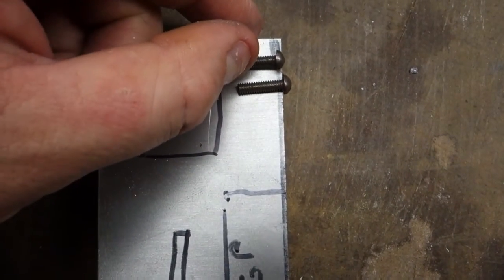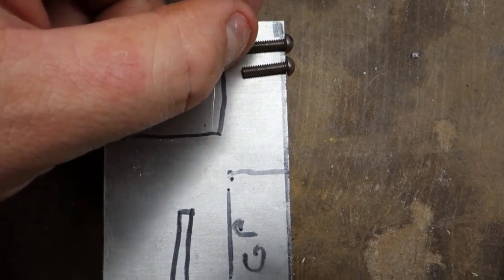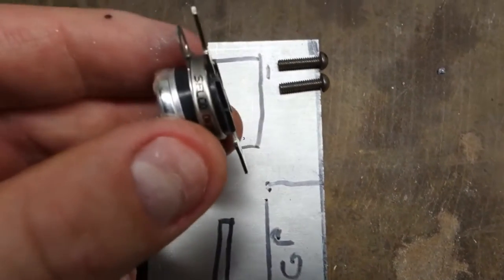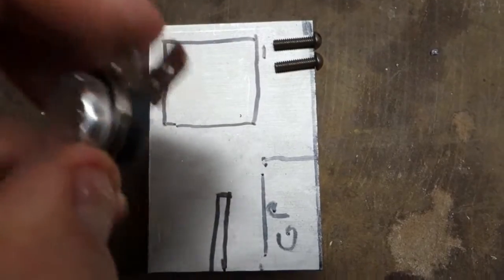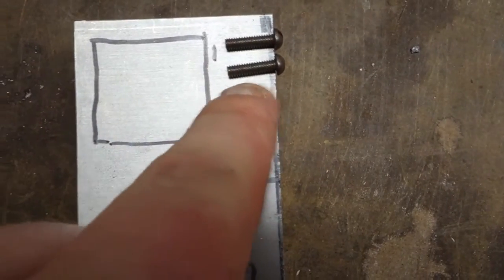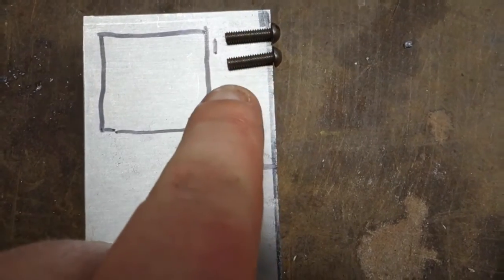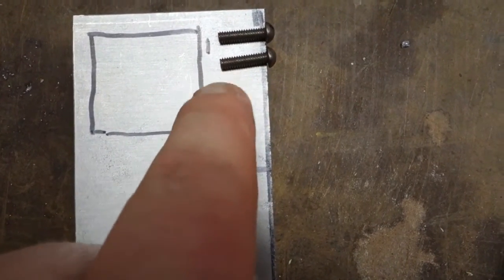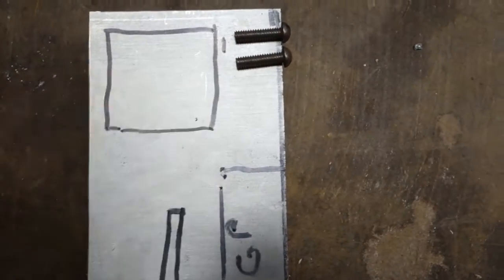I'm just reusing these screws because I don't feel like buying anything else for this, but I'm going to mount the thermostat on the side here. I need this to be long enough so that way when I tap this, the screws aren't going to the side here.